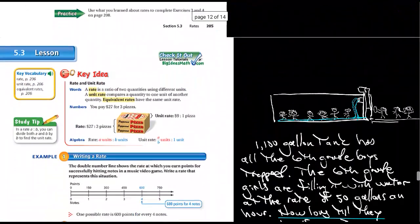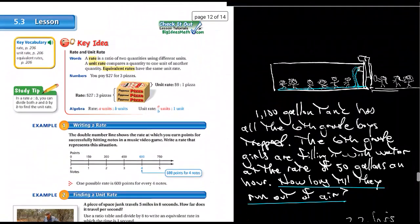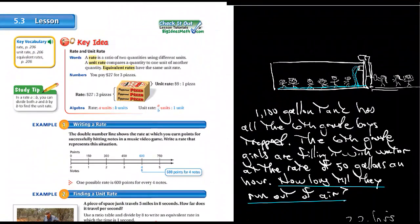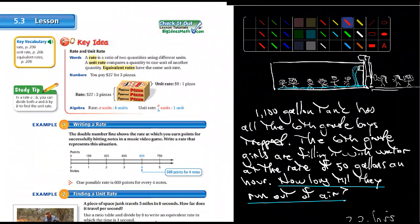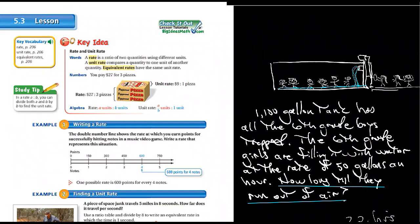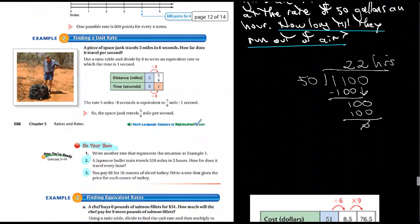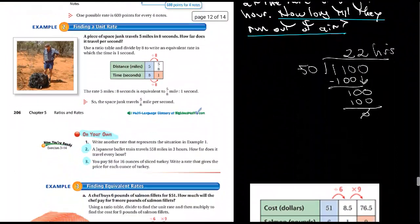We're going to move down a little bit here, and the 5.3 lesson continued. I talked about this just a couple days ago. I mentioned what they have here: a rate is a ratio of two quantities used in different units, and a unit rate is it reduced. And then I did a fun example.